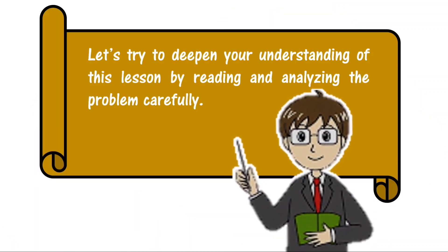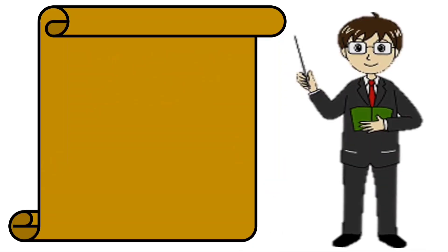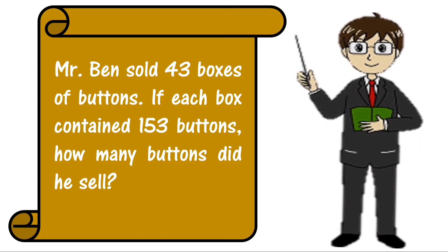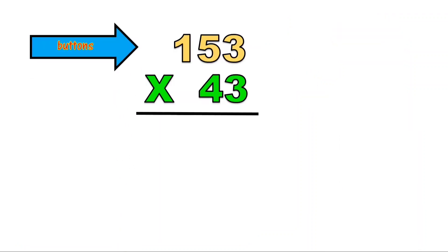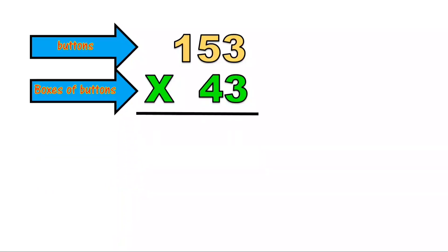Let's try to deepen your understanding of this lesson by reading and analyzing the problem carefully. Mr. Ben sold 43 boxes of buttons. If each box contained 153 buttons, how many buttons did he sell? We have 153 buttons times 43 boxes of buttons.